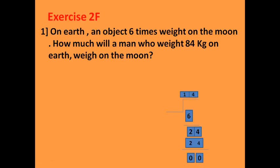Now we start exercise 2F, number 1. On earth, an object weighs six times its weight on the moon. How much will a man who weighed 84 kg on earth weigh on the moon? Here we read the problem and understand what it is talking about — the problem is about weight on earth versus the moon.